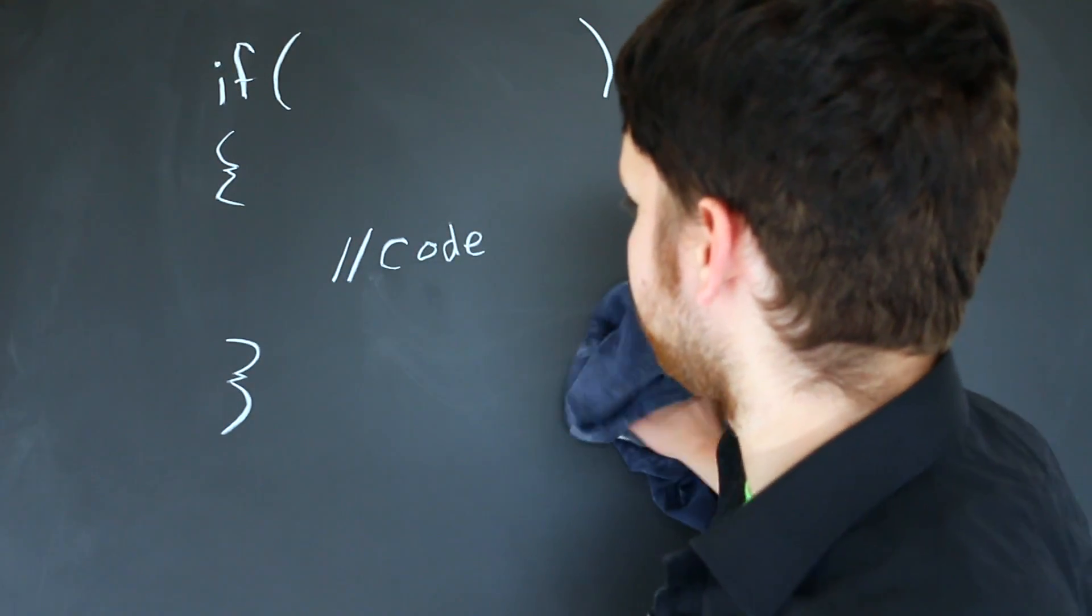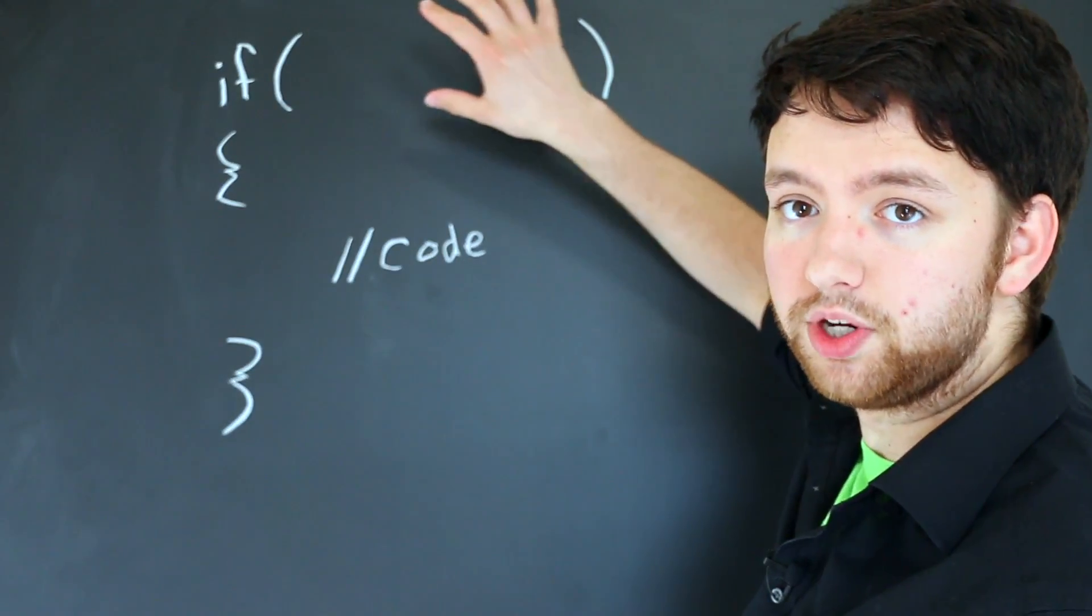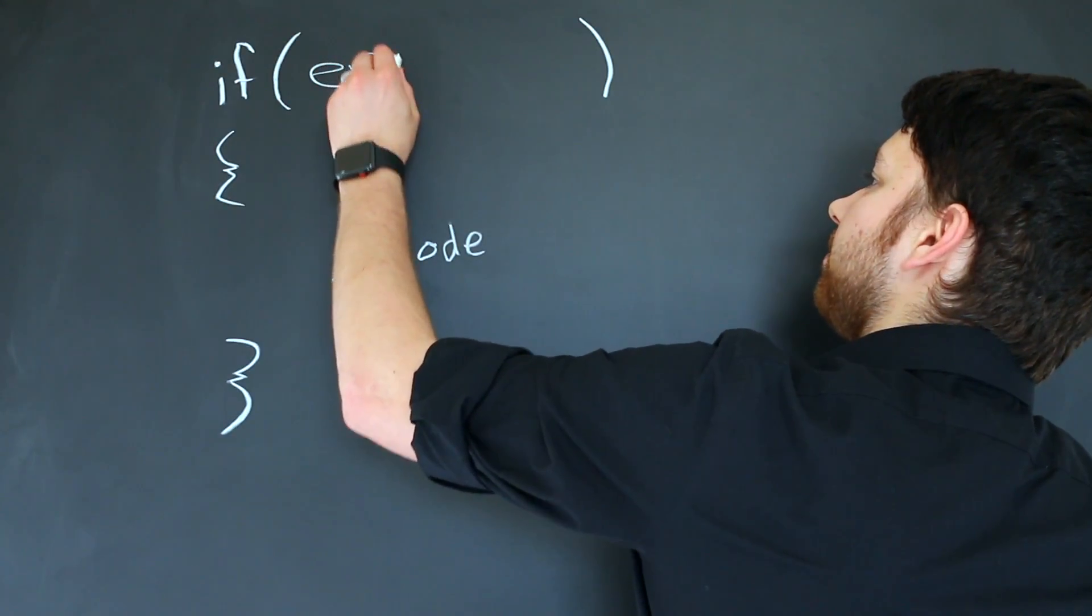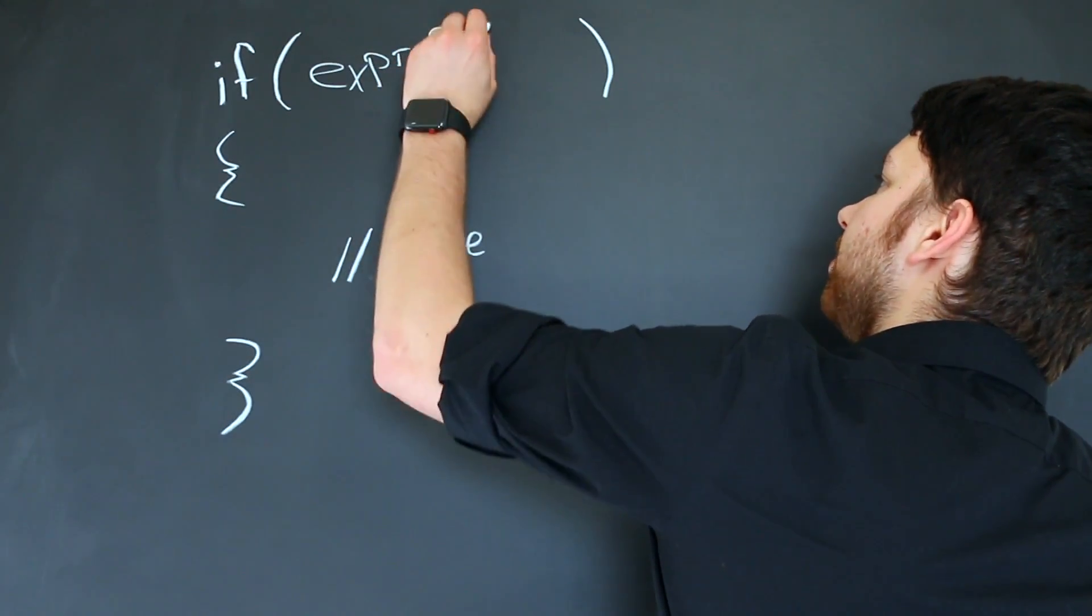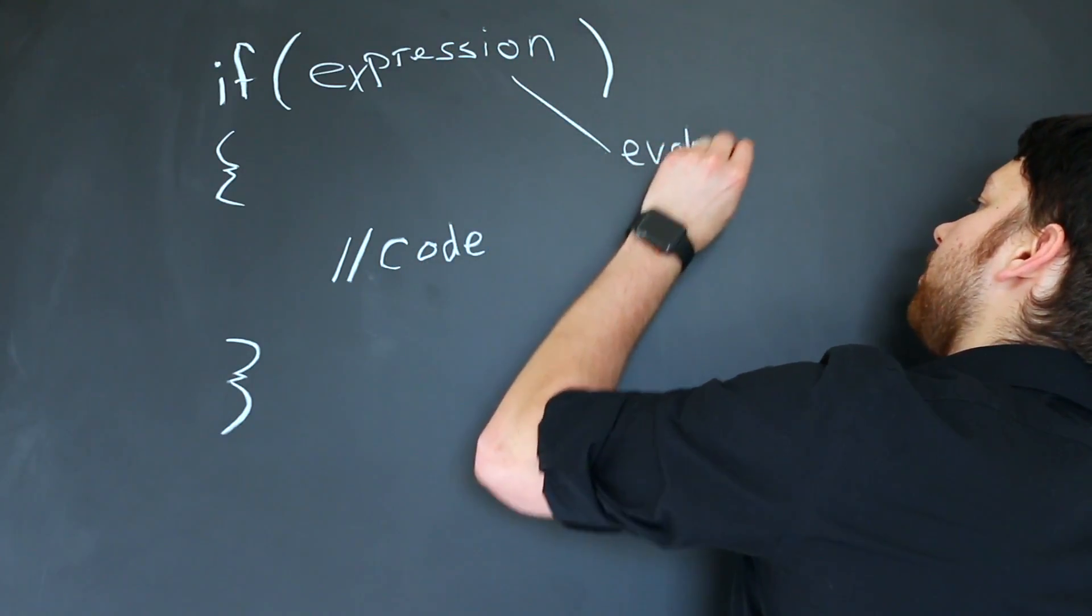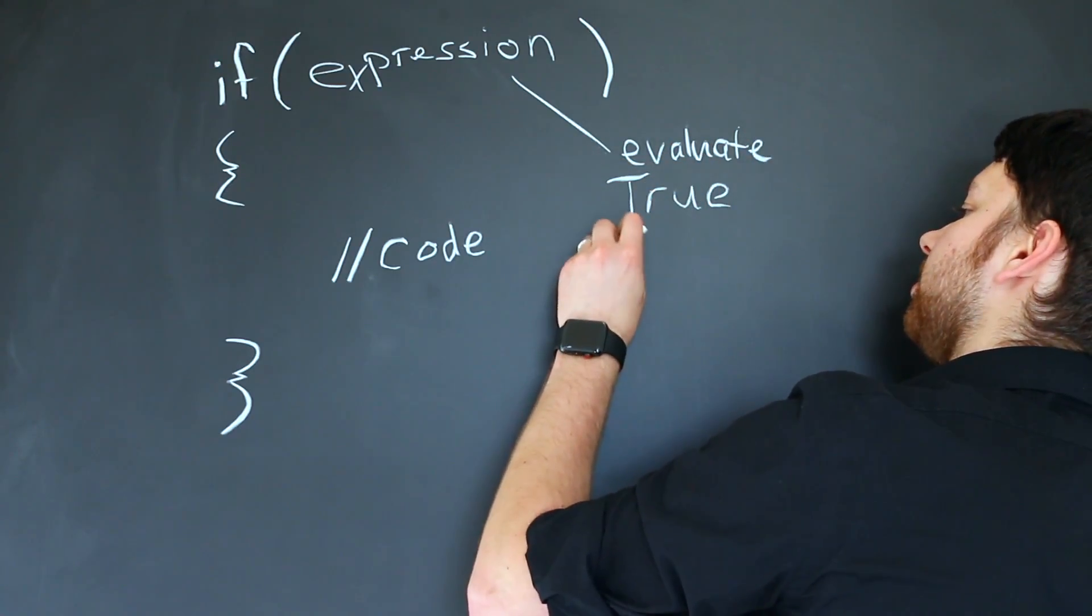So now that we know what these characters are called, we just got to describe what's going on here. Inside of these curly braces, we are going to put an expression. If you remember from the previous video, what's going to happen is that this expression gets evaluated and it's going to evaluate to true or false. So this is a boolean expression.